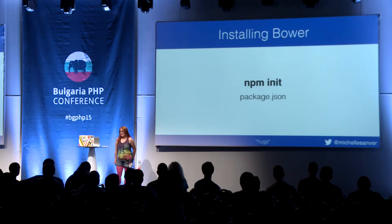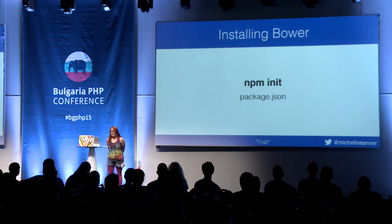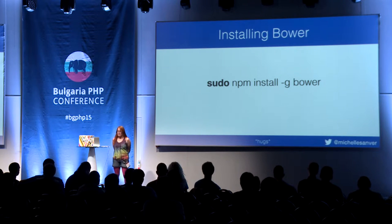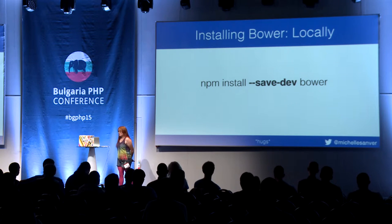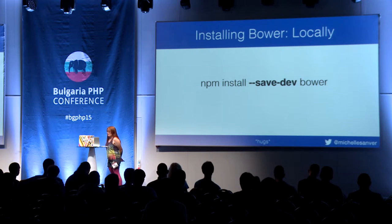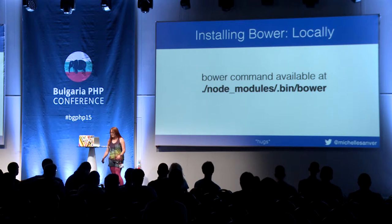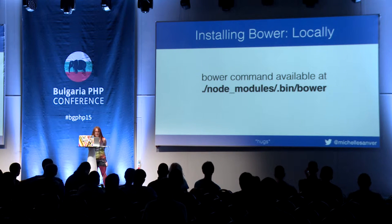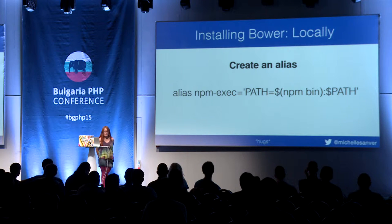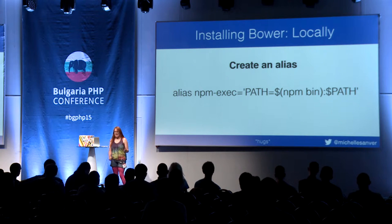Installing Bower is super easy. You have to have Node installed and run npm init to generate your package.json file. You can install globally with: sudo npm install -g bower. But it's usually advised to install it locally, which you do with the --save-dev flag. You'll probably want to create an alias as well. Then if you run npm exec bower after putting it in your path, you can simply execute it.